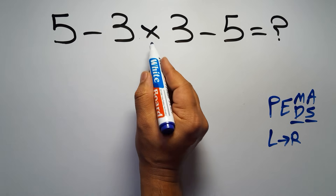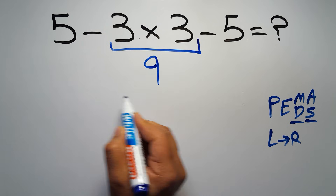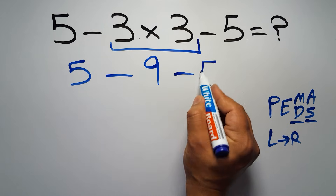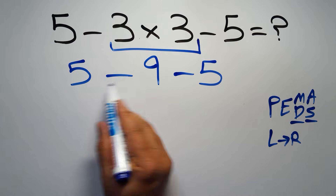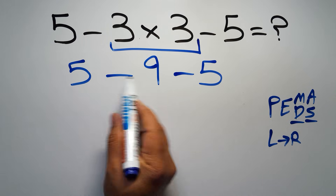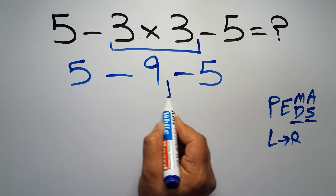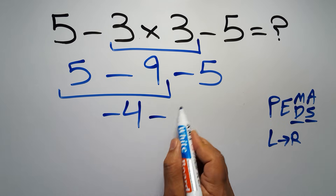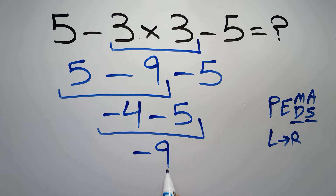So first, this multiplication: 3 times 3 gives us 9. So we have 5 minus 9 minus 5. We have two subtractions, and when we have more than one subtraction in an expression we have to work from left to right. First, 5 minus 9 gives us negative 4. Then negative 4 minus 5 equals negative 9. This is our final answer.